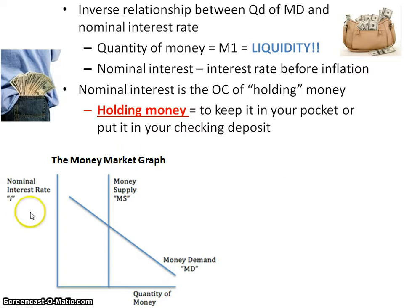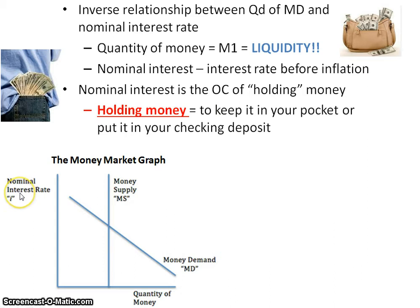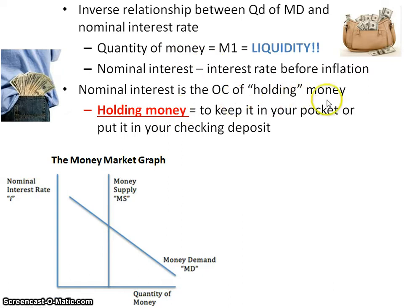Going back to this inverse relationship between the quantity of money demanded and the nominal interest rate — when we're talking about money, we're talking about M1 and how the liquidity within it allows people to utilize it right away. The nominal interest rate is the interest rate before inflation, and it represents the interest you could get if you put it in the bank — the opportunity cost of holding the money or not investing it in some way.